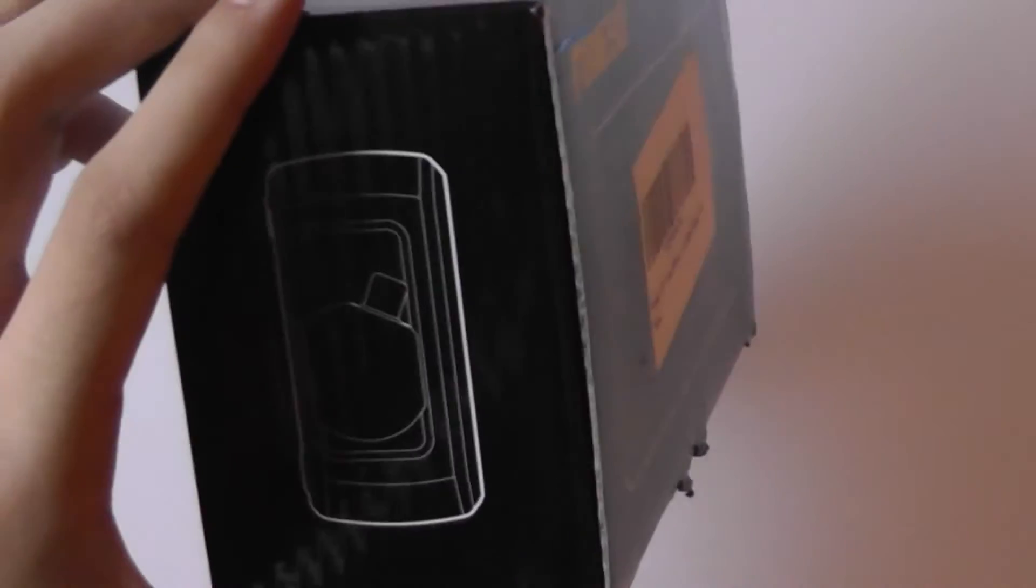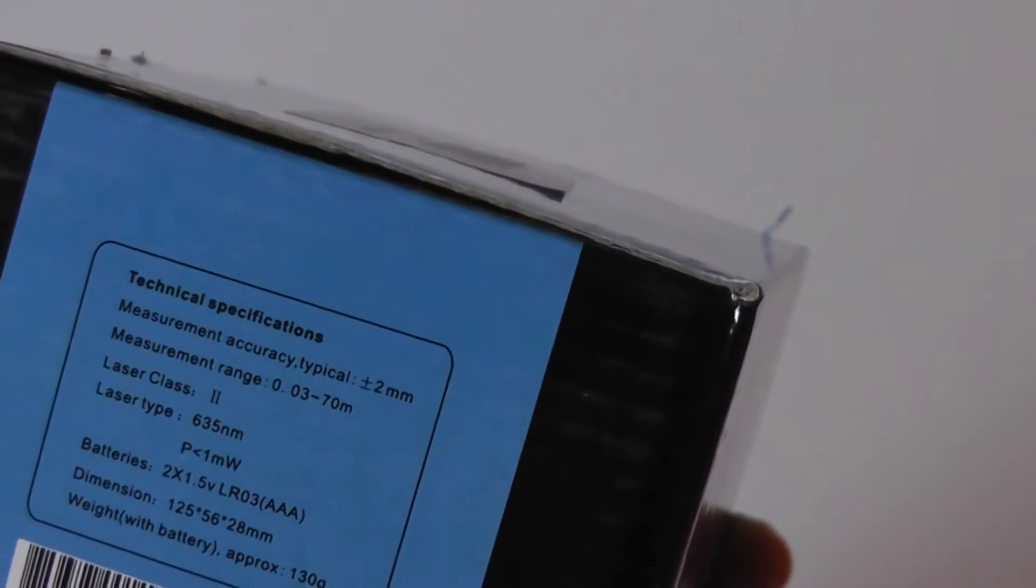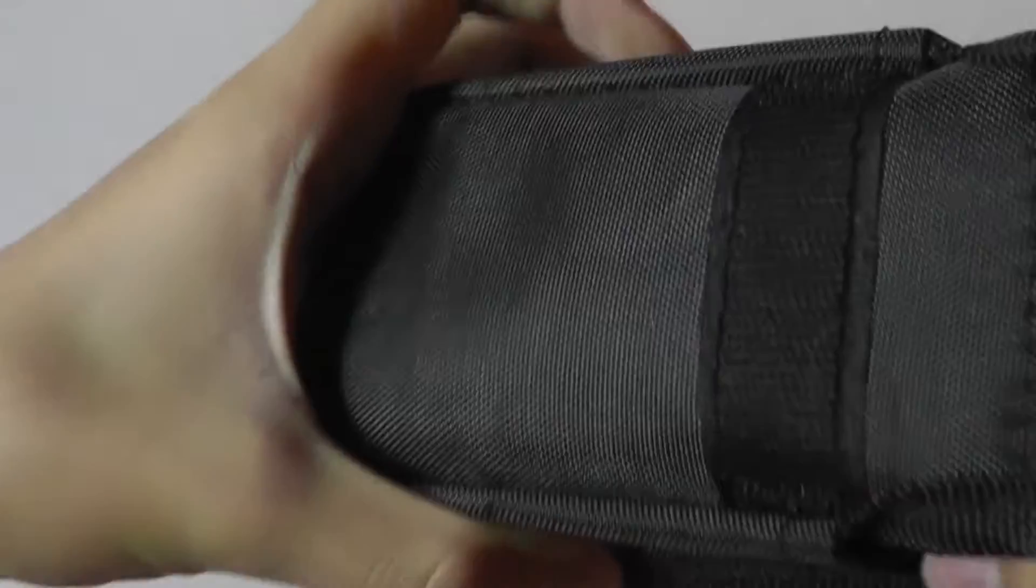So taking a look at the box here, it's pretty simple. It just shows you the various components and the design of the unit. On the sides there are some specifications about the laser, which is class 2, and again 70 meters is going to be that distance.